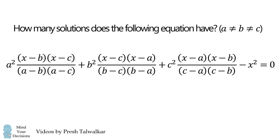Then we add the third term: c squared multiplied by x minus a multiplied by x minus b, all over c minus a multiplied by c minus b. Finally, we subtract x squared, and the entire equation is equal to zero.